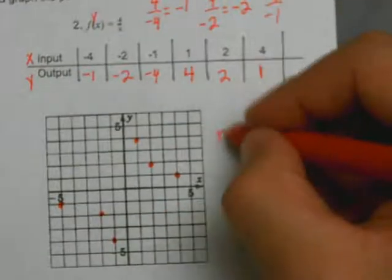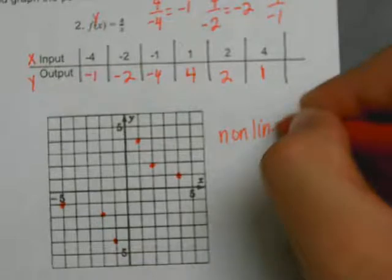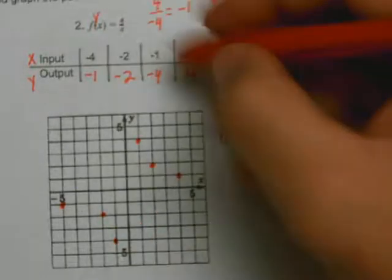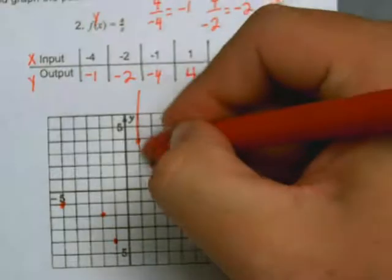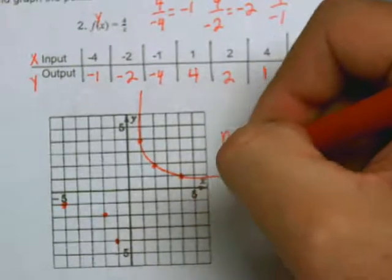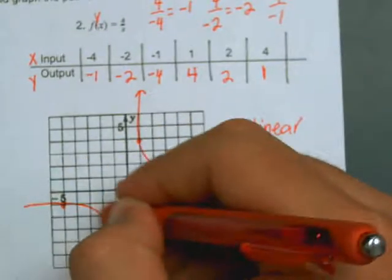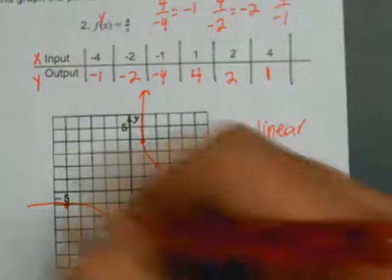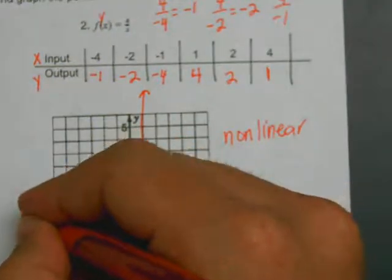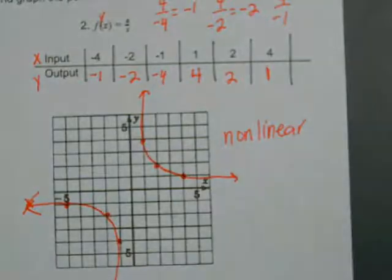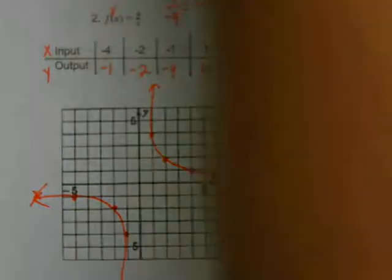And then as we know this is going to be nonlinear because you have an x in the denominator. So what this graph actually looks like, it's going to be two curves in quadrant 1 and quadrant 3, so it's something like this.